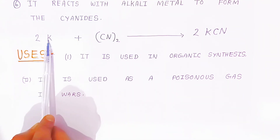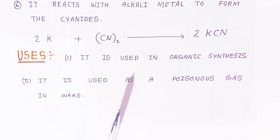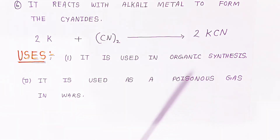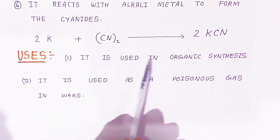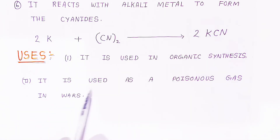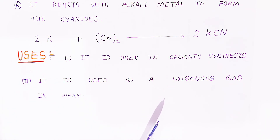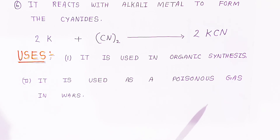When cyanogen reacts with potassium, it forms potassium cyanide. Regarding the uses of cyanogen: first, it is used in organic synthesis, as many organic compounds can be prepared with the help of cyanogen. Second, it is used as a poisonous gas in wars. These are very important properties of cyanogen. If you like this video, please share and subscribe. Thank you very much, have a nice day, God bless you.